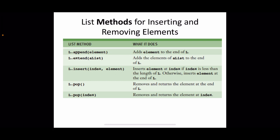The different list methods include: append, whose syntax is list_name.append(element), which adds the element at the end of the list; extend, which takes another list as argument and appends its items to the end; insert, which inserts a new element at a specified position; and pop, which removes and returns the element at the end of the list, or at a specified index position.